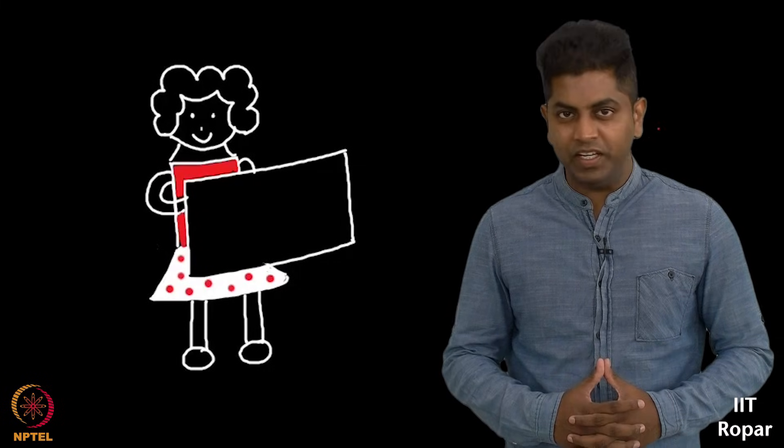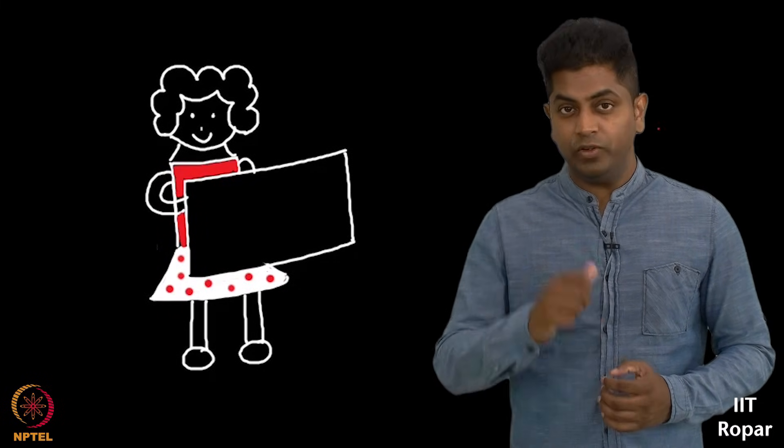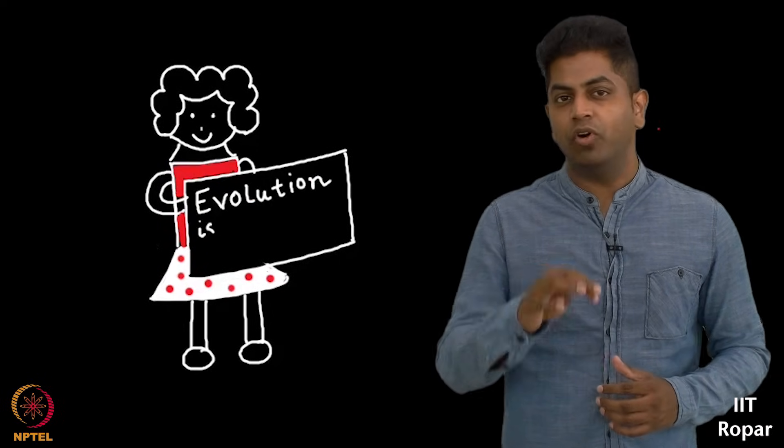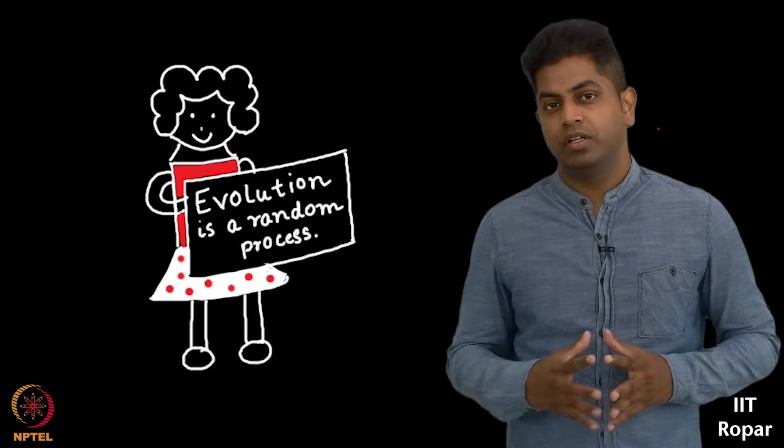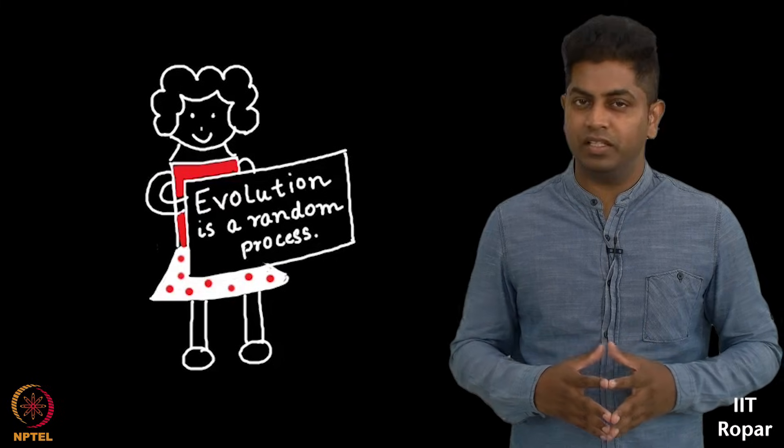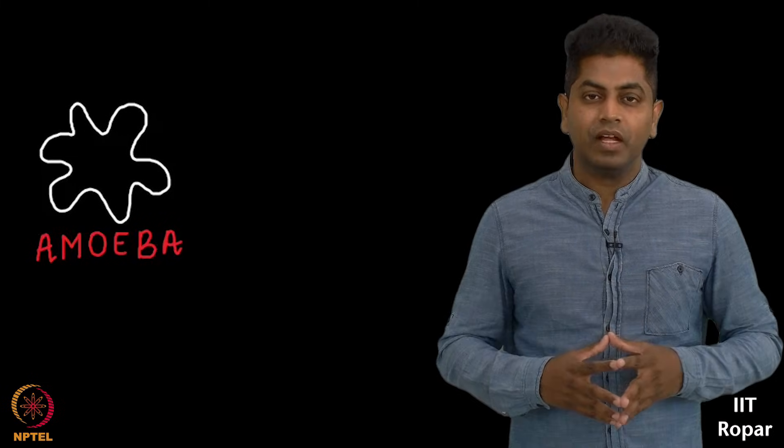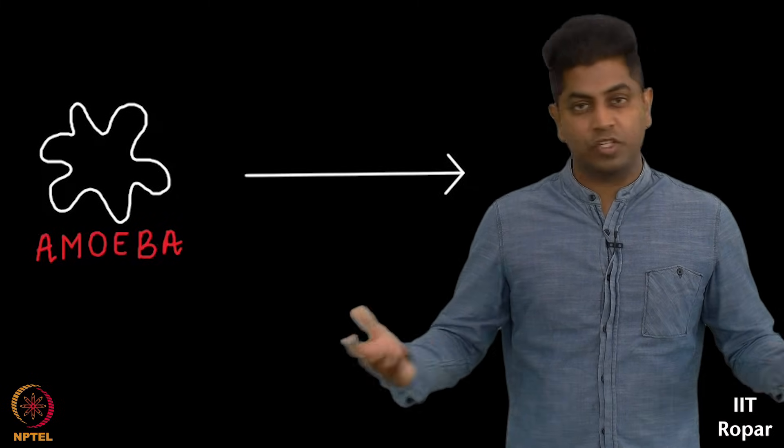You saw the conversation between Avni and Simran. Avni is trying to explain to Simran that there is some sort of randomness involved in evolution of species from one to the other. We all know that life started off as amoeba and now we are as homo sapiens, humans.